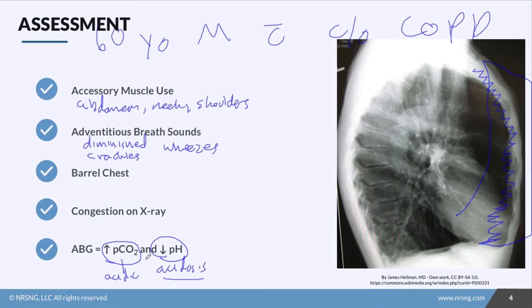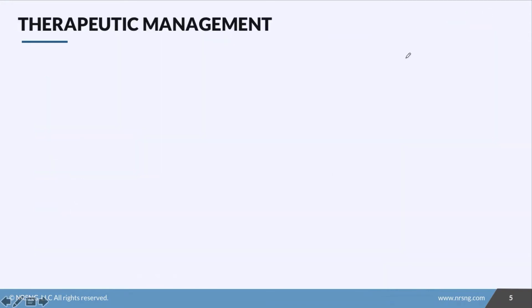So make sure you check out the ABG lesson if you need additional review. So what do we do for these patients? Well just like asthma we're going to give bronchodilators then corticosteroids. Remember bronchodilators first to make sure the airways are open enough to receive the steroids. We're going to monitor SpO2 and ABG remembering that their baseline might be abnormal and we usually keep SATs between 88 and 92. We can do chest physiotherapy or CPT to mobilize those secretions and to help clear the airways.